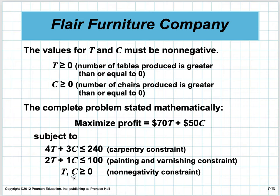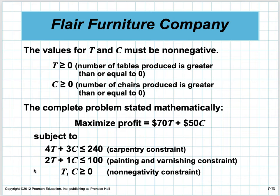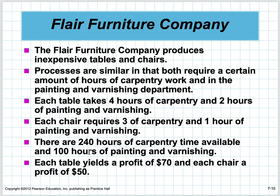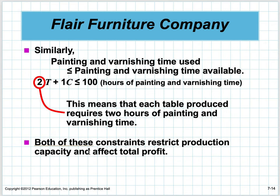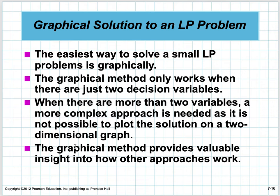The complete problem stated mathematically is: maximize 70T + 50C, subject to 4T + 3C ≤ 240 (carpentry constraint), 2T + C ≤ 100 (painting constraint), and T, C ≥ 0. I will take points off if you don't include the non-negativity constraint. In real life, you first write the story problem, then mathematically model it, then solve it.